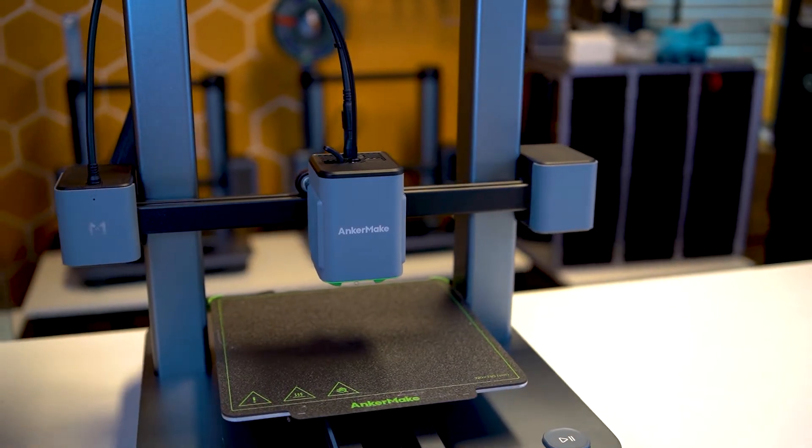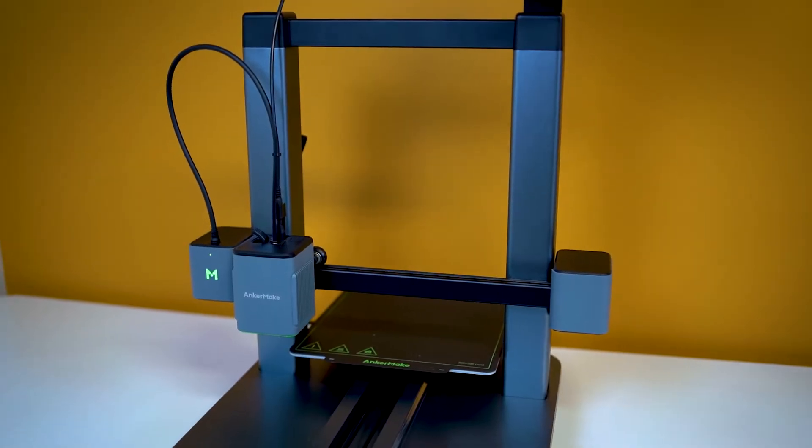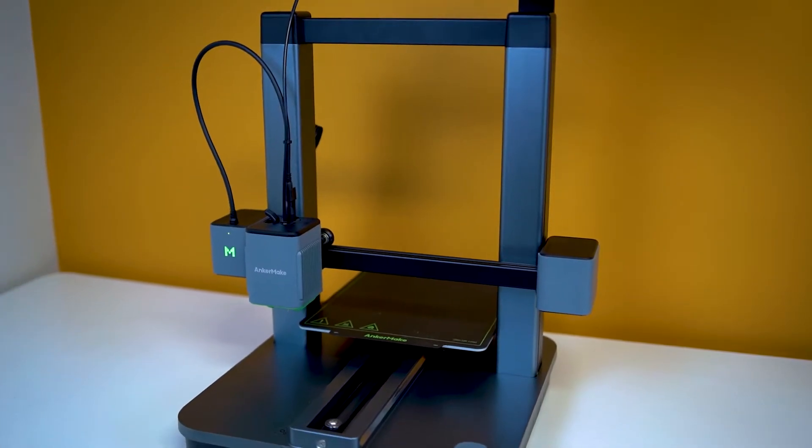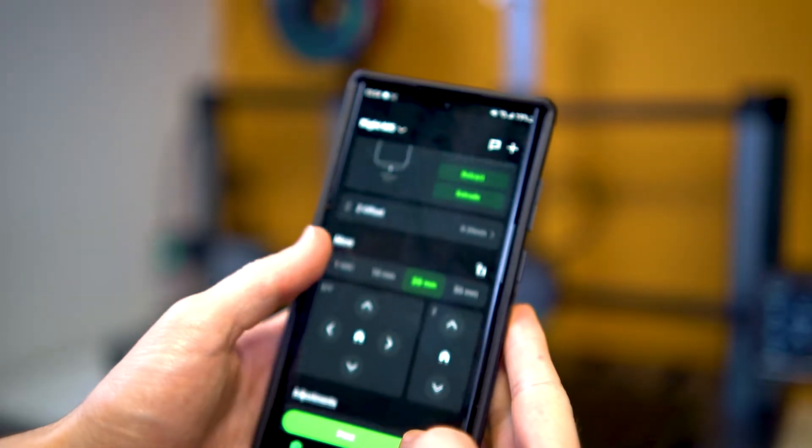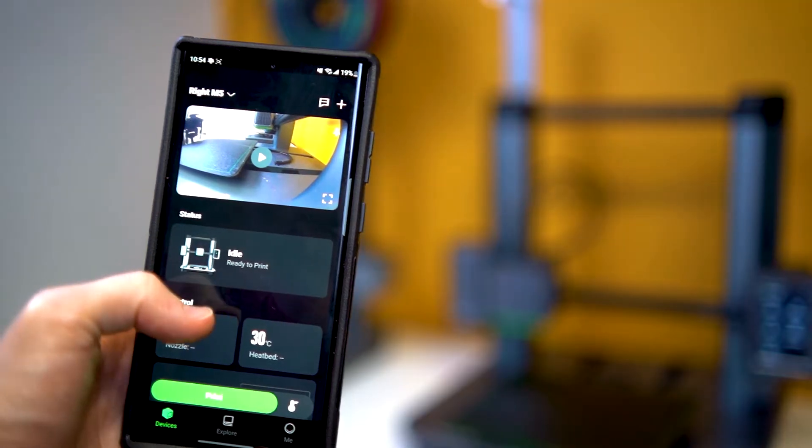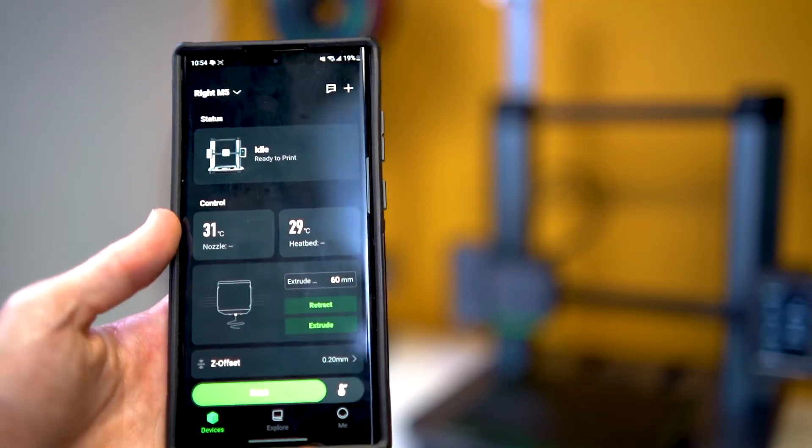Along with the M5C, AnkerMake has released a completely revamped app which allows for full printer control and seamless integration to an unlimited number of AnkerMake devices. This brand new app allows for fully customizable thermal preheat settings, access homing and other motor controls, Z-Offset calibration, and much more.